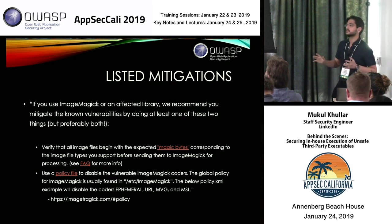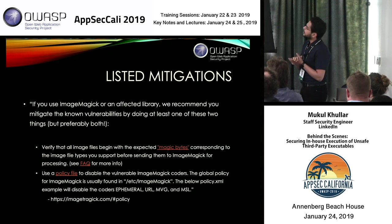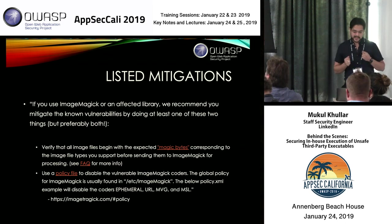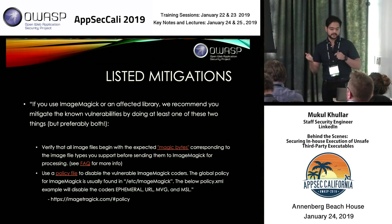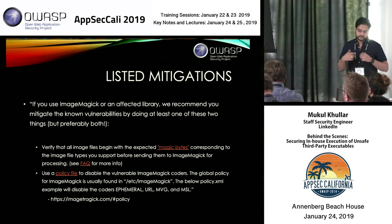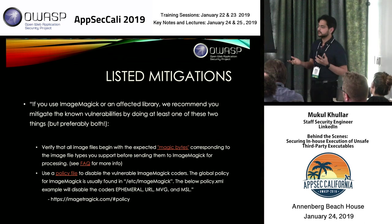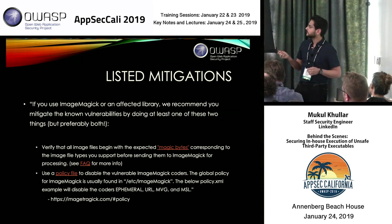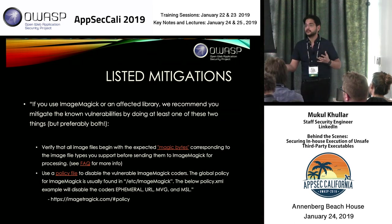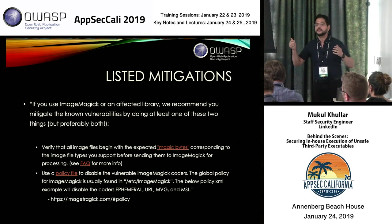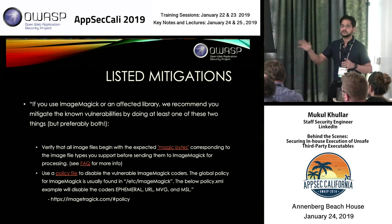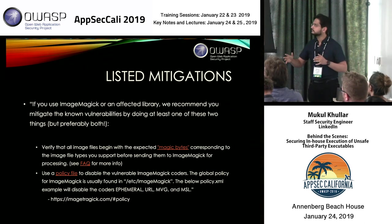Listed mitigations on the ImageTragick website typically recommended verifying image files received from users — do magic byte analysis before sending them to ImageMagick. ImageMagick also supports a policy file at the application layer to disable certain coders that may be bad for your environment. For example, the ephemeral protocol could be disabled in that policy file, which would reduce the kind of invocations an attacker could make.